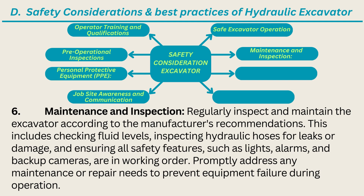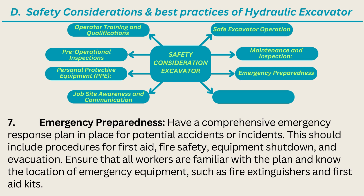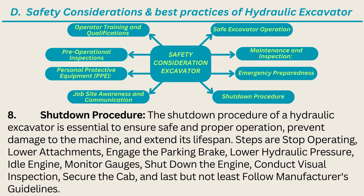7. Emergency preparedness: Have a comprehensive emergency response plan in place for potential accidents or incidents. This should include procedures for first aid, fire safety, equipment shutdown, and evacuation. Ensure that all workers are familiar with the plan and know the location of emergency equipment such as fire extinguishers and first aid kits.